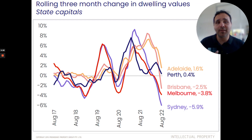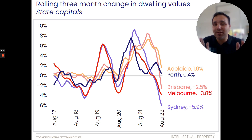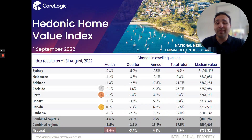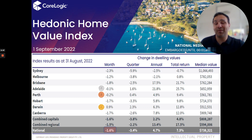This is the rolling three-month change in dwelling values for our state capitals. We can see a further decline in Sydney and Melbourne — I mentioned about three or four months ago we'd see the biggest declines in those two markets. Brisbane's now joining the party, down 2.5% over the past quarter, though Brisbane and Adelaide increased by almost 30% last year, so this is not the end of days. Adelaide and Perth are also starting to soften but not yet in negative territory. Every capital city apart from Darwin has had negative monthly growth, with only regional South Australia recording an increase for the month.